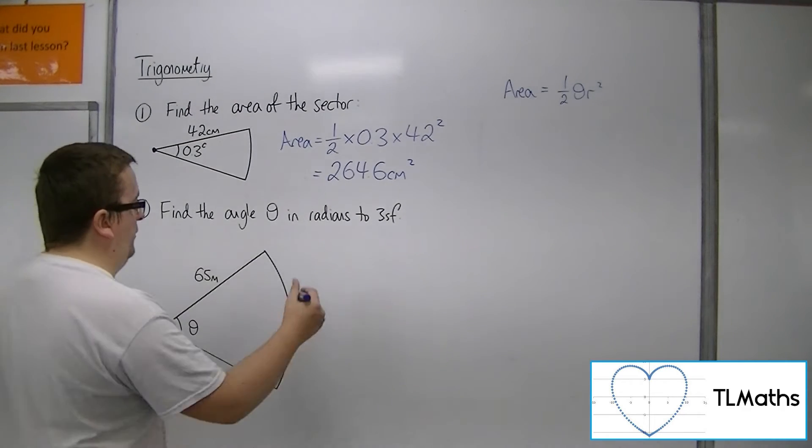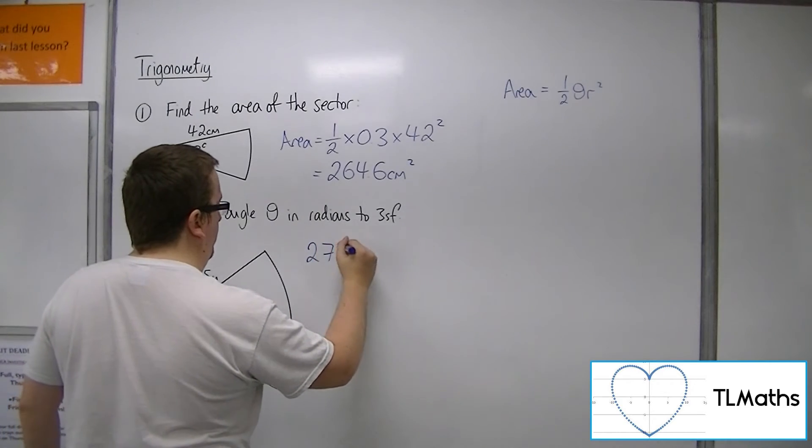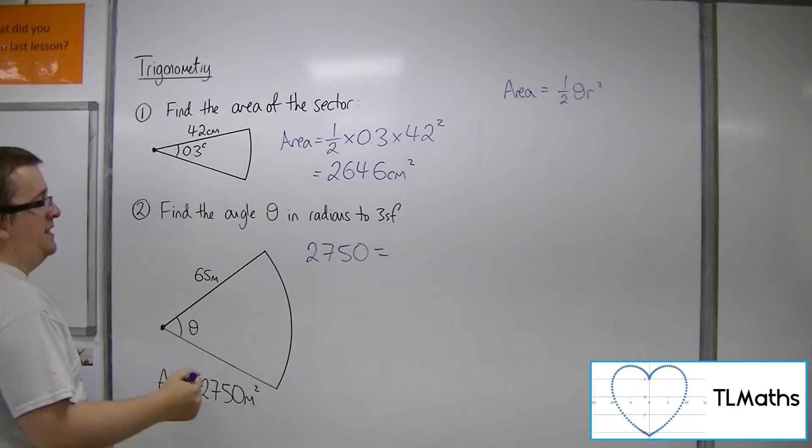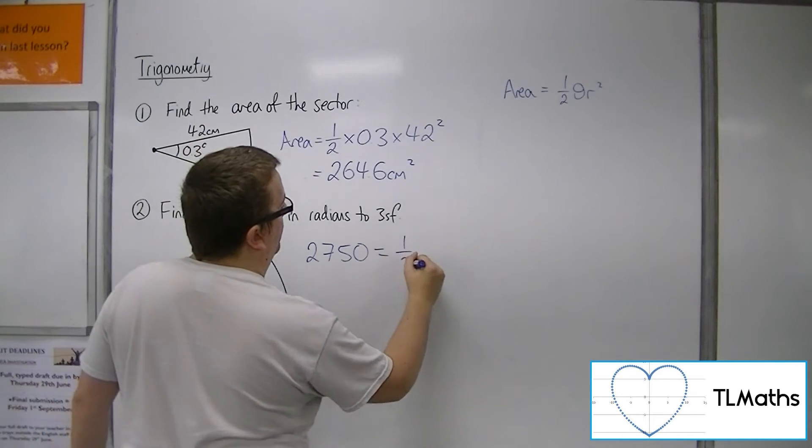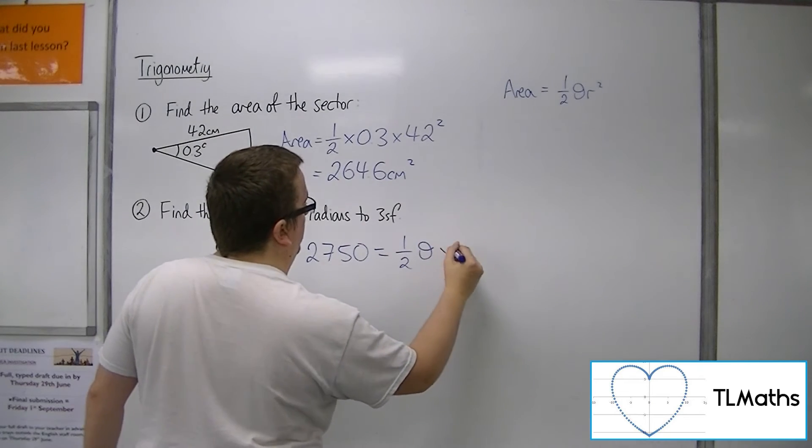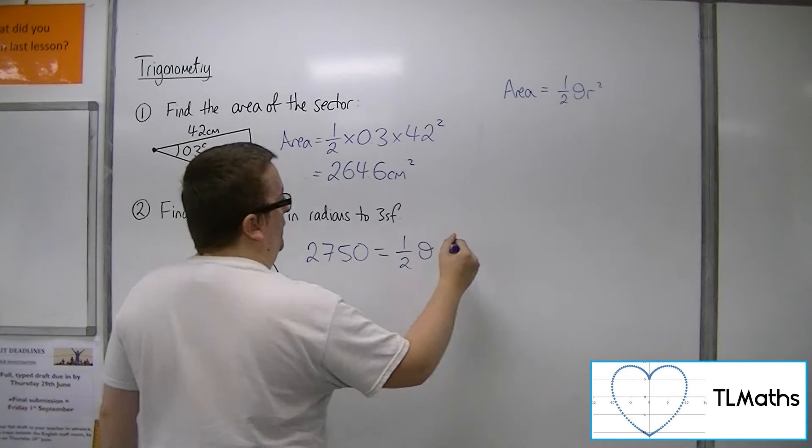So 2750 is going to be equal to 1 half theta times r squared, 65 squared.